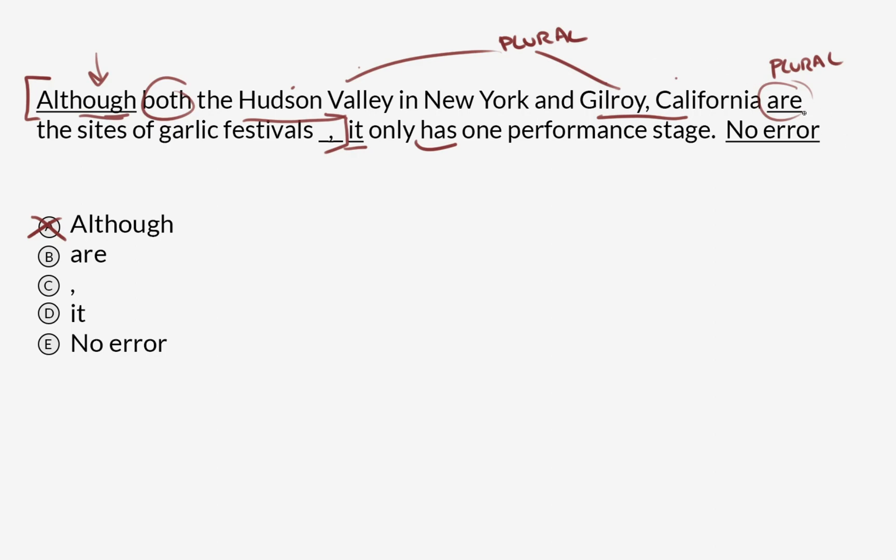We want to see if this underlined verb 'are' also agrees in tense with other verbs in the sentence. We see here we have 'has,' which is also in the present tense. So this isn't an error either.